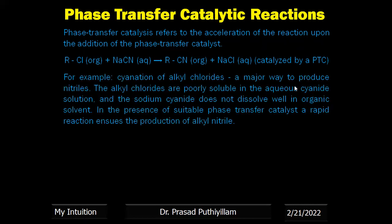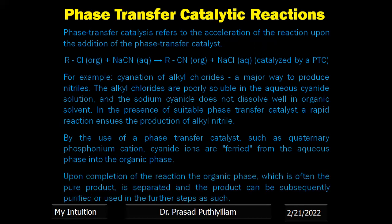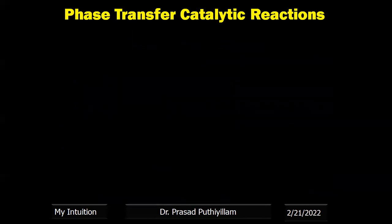The cyanation of alkyl chloride is a major way to produce nitriles (RCN). Alkyl chlorides are poorly soluble in aqueous cyanide solution, and sodium cyanide does not dissolve in organic solvents. In the presence of a suitable phase transfer catalyst, a rapid reaction ensures production of alkyl nitrile. By use of PTC such as a quaternary phosphonium cation, cyanide ions are freed and transferred from the aqueous phase into the organic phase. Upon completion, the organic phase, which is often the pure product, can be separated and purified or used in further steps.